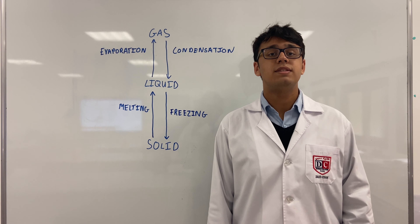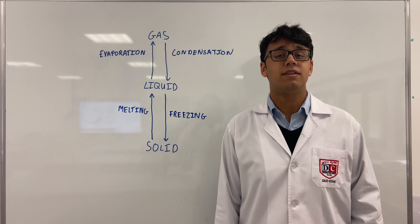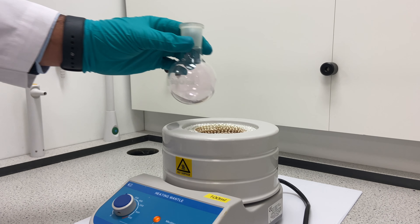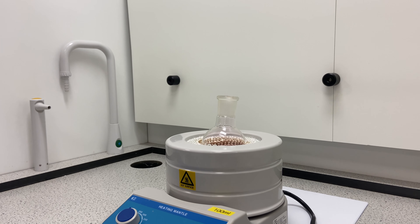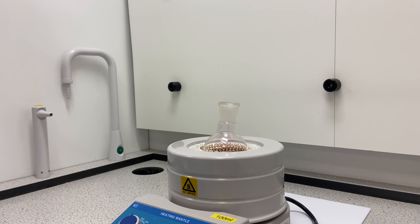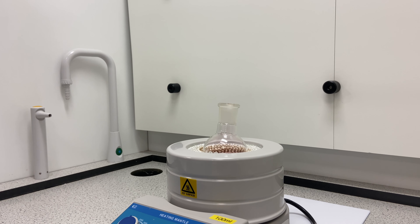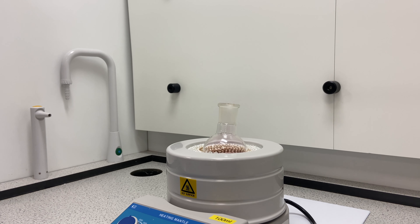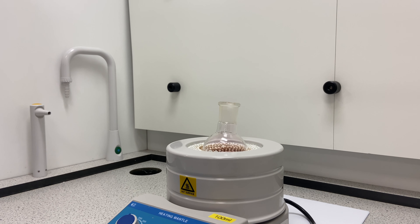So now we've done solids and liquids, and liquids and gases. But what about the other changes of state? Sublimation is the process of a solid becoming a gas without going through the liquid phase. An example you may have seen is dry ice, which is solid carbon dioxide. Another example is iodine — a grey solid which sublimes at high temperatures, becoming a purple vapour. We're now heating a sample to show you sublimation in action.